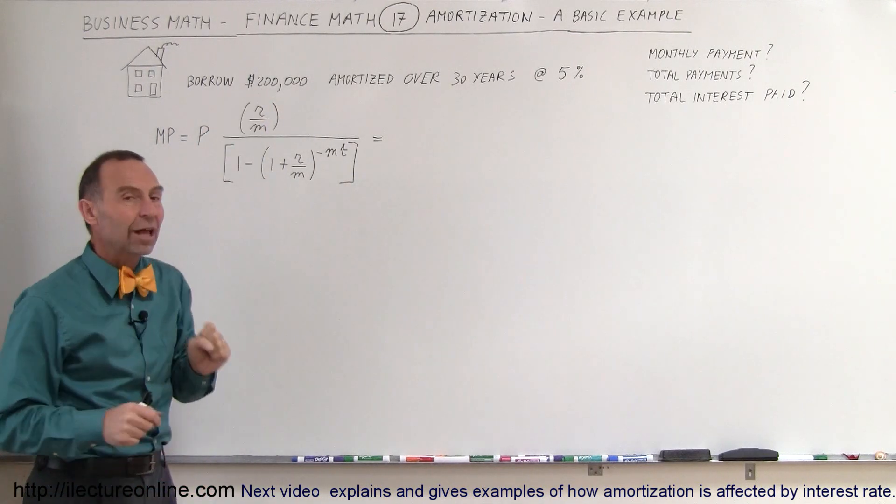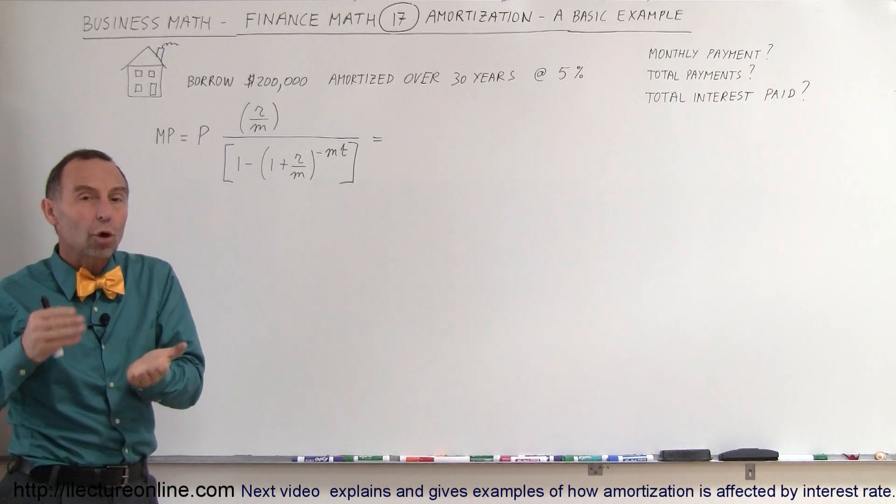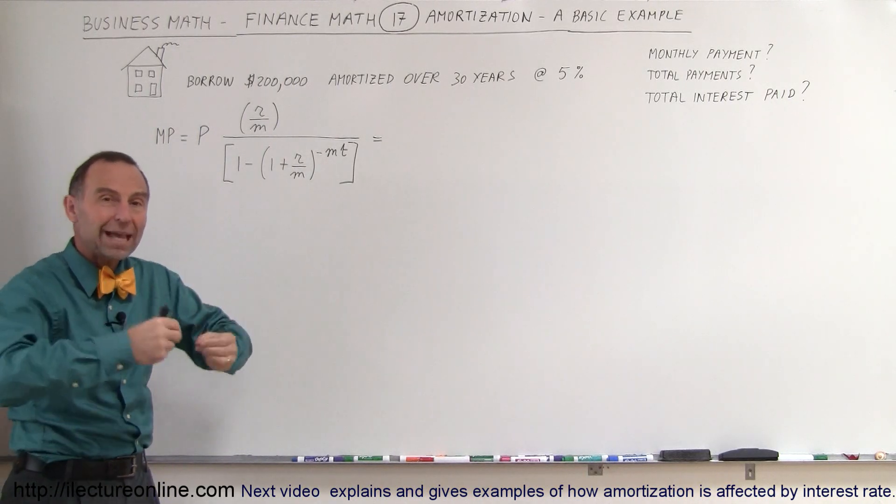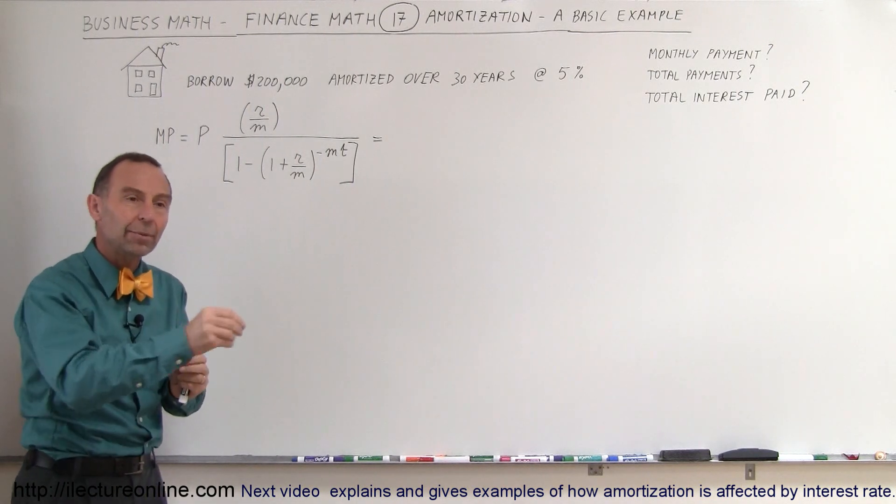Let's say we need to borrow $200,000 in order to make the sale and so we're going to amortize the loan over 30 years. That means we're going to pay back the loan over a period of 30 years, we're going to make 30 equal payments.